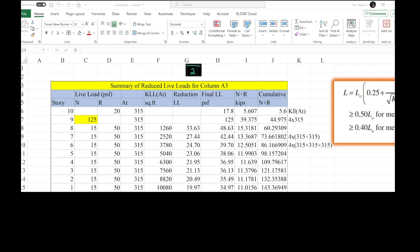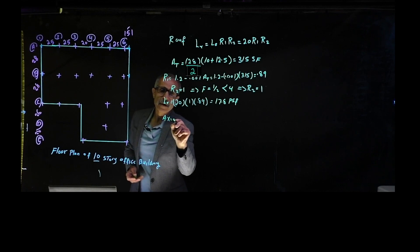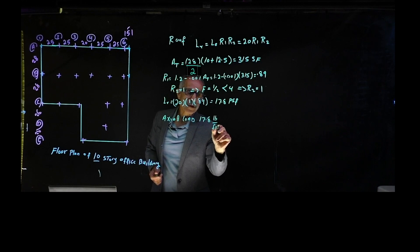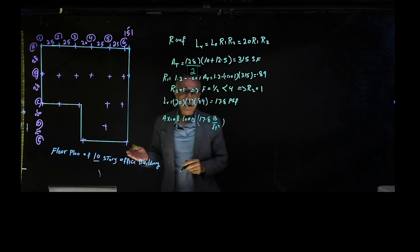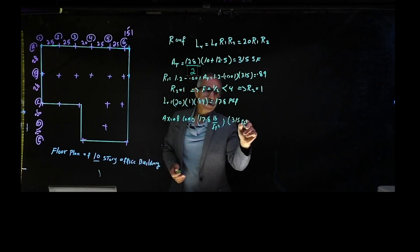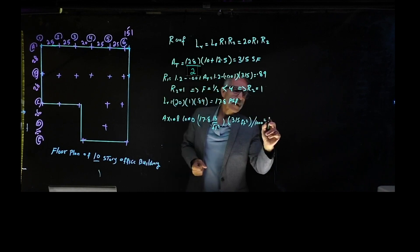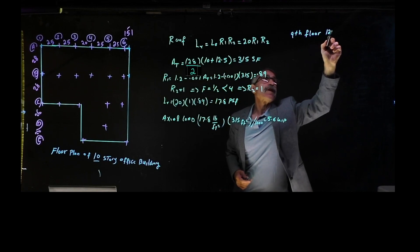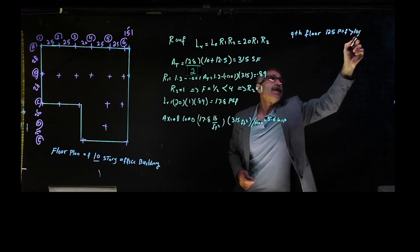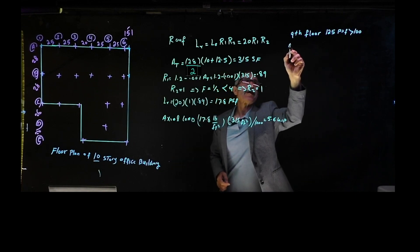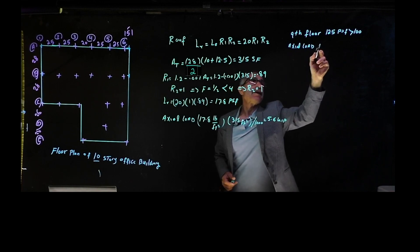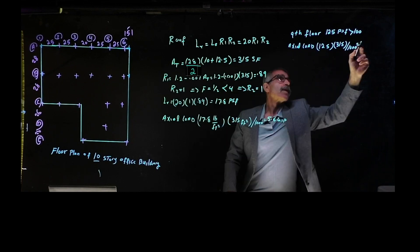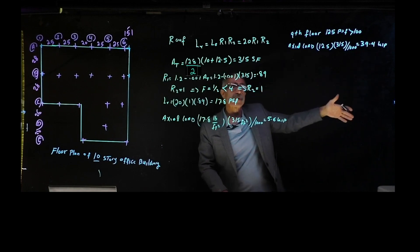Now we calculate the axial load from the roof: 17.8 pounds per square foot times 315 square feet, divided by 1000 to convert to kips, gives 5.6 kips. The 9th floor is storage at 125 pounds per square foot — since that's greater than 100, it is non-reducible. The axial load is therefore 125 × 315 ÷ 1000 = 39.4 kips. We add that to the spreadsheet.